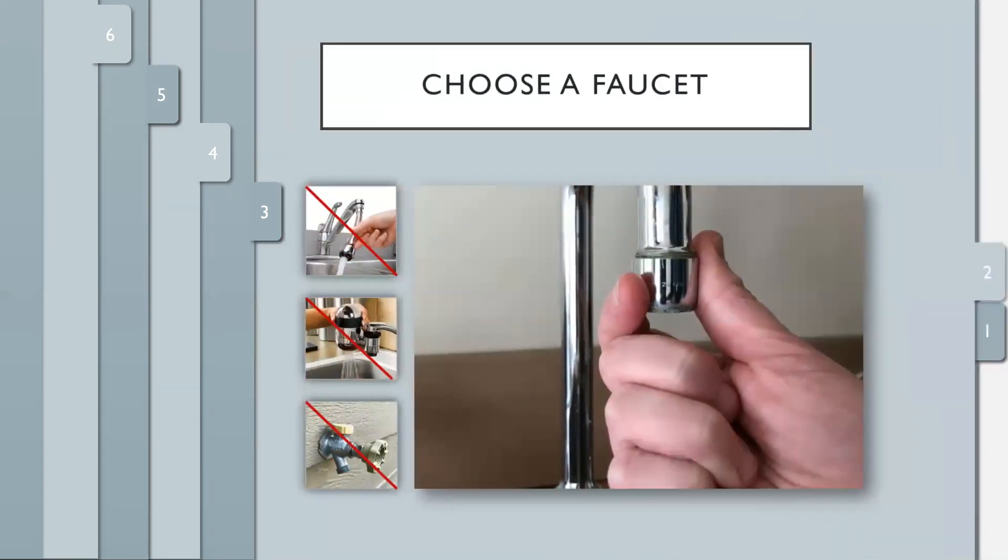When you are ready to collect the sample, you must start by selecting a faucet. Choose an indoor faucet. Avoid faucets that leak, swivel, have sprayers, or are attached to treatment devices. If there is an aeration screen on the faucet, as shown in the large picture here, unscrew it and set it to the side.